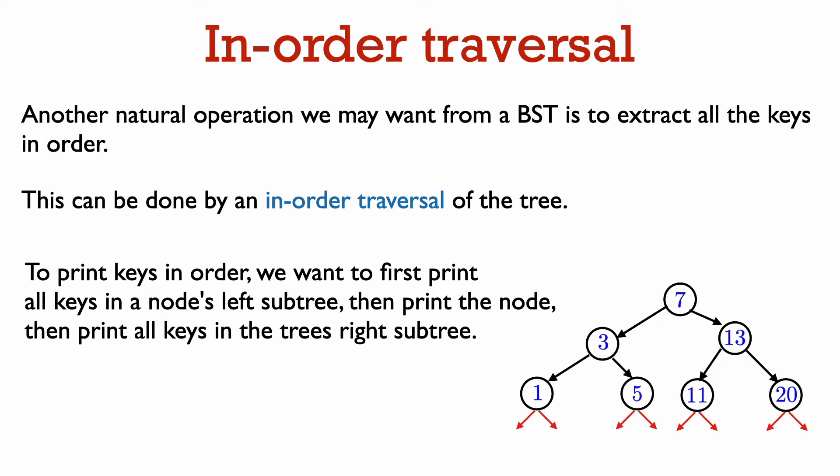Let's say that we want to print out all the keys of our BST in sorted order from smallest to largest. How can we do this? Let's think about an algorithm that begins at the root. This is always our natural starting point in working with BSTs because in our BST class, we store a pointer to the root node. In the picture here, the root has key 7. All the keys that are less than 7 in the BST are in the subtree of the left child of the root.